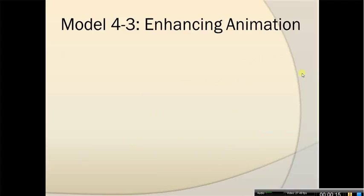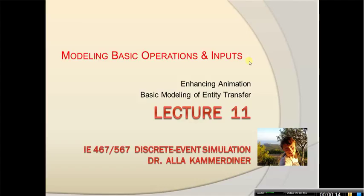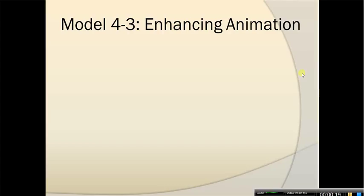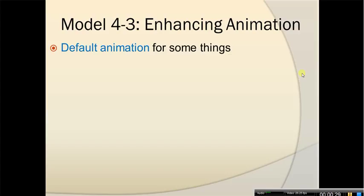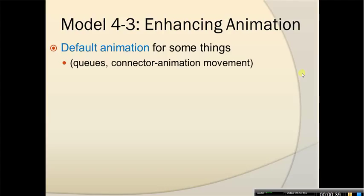What we will do today is consider model 4.3, which is an extension of model 4.2 from the book. In this model we will be enhancing animation. As you noticed when we were creating our models, some default animation is being created for things such as queues or connector animation movements, and this type of animation is usually sufficient for verification and validation.